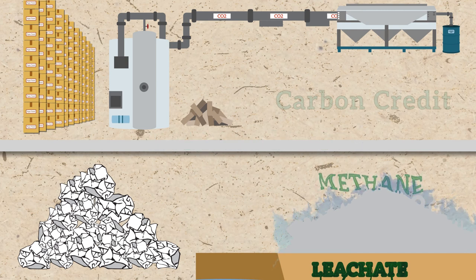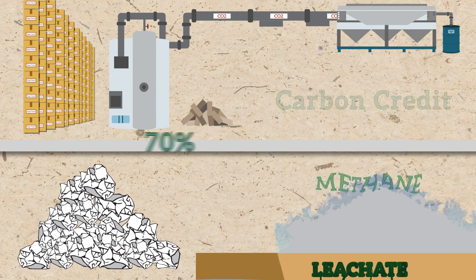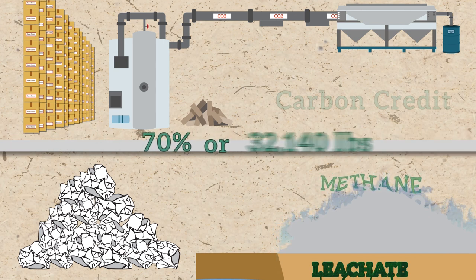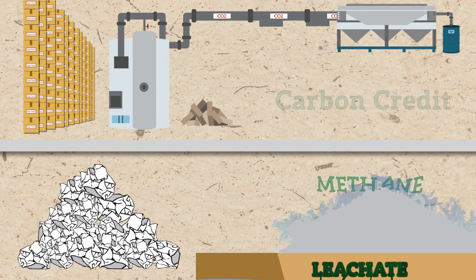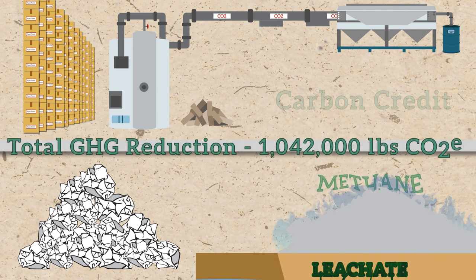Wait, there's more. CO2 carbon scrubbing will reduce the CO2 emissions another 70%, or 32,140 pounds. Total GHG reduction is 1,042,000 pounds CO2 equivalent.